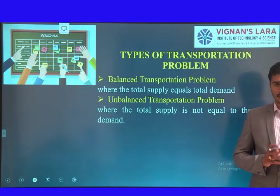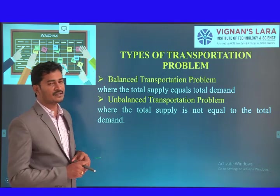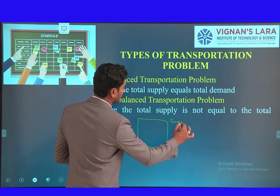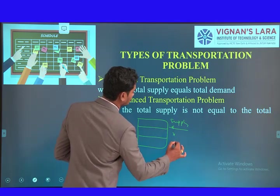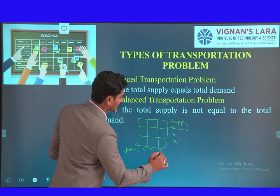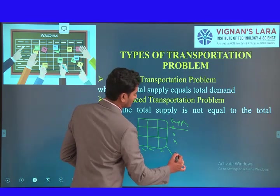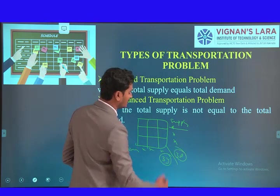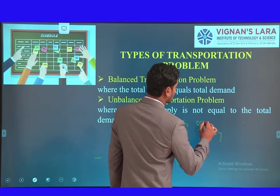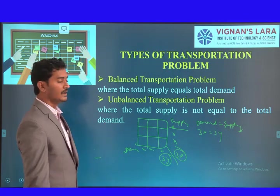We have two types of transportation problems. One is the balanced transportation problem and another is the unbalanced transportation problem. The balanced transportation problem is also called the rim condition. In a balanced problem, each source has some supply and each destination has some demand, and the total supply equals the total demand. If demand is more than supply or supply is more than demand, it is an unbalanced transportation problem. When supply equals demand, the problem is called a balanced transportation problem.